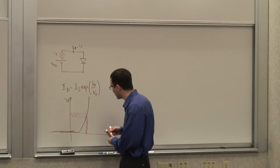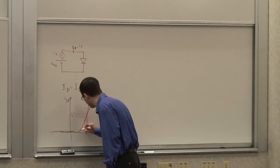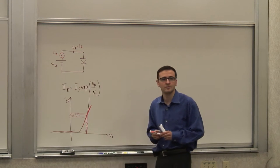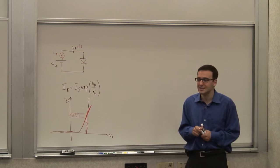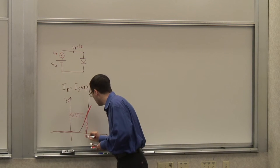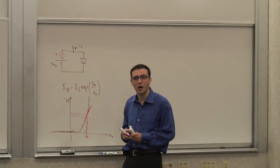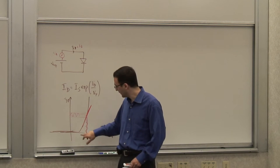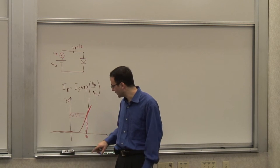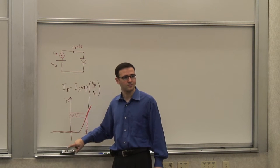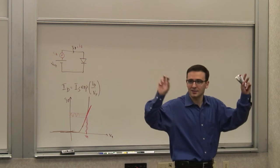And you can see it really depends on the quiescent operating point. If I do it here, I get one value; if I do it at a different point, I get a different value. So it depends on where I'm biased. But around that operating point, for small perturbations, I can find out what the dependence looks like.